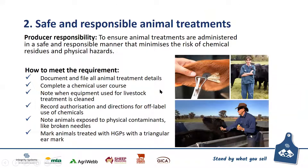The second element is safe and responsible animal treatments. Your responsibility is to ensure that animal treatments are administered in a safe and responsible manner, minimising the risk of chemical residues and physical hazards. You need to document and file all animal treatment details — including treatment date, animal or mob identification, chemical or drug used, and dose rate. You should also complete a chemical user course, note when equipment used for livestock treatment is cleaned, record authorisation for any off-label use of chemicals, note animals exposed to physical contaminants such as broken needles, and mark animals treated with HGPs with a triangular earmark.